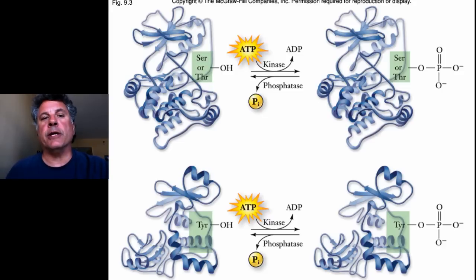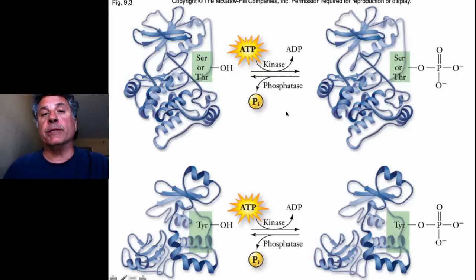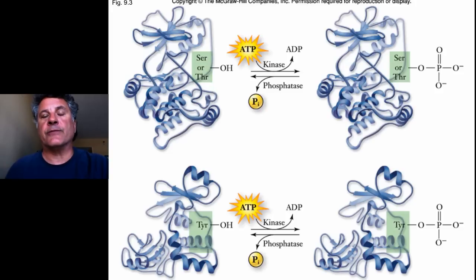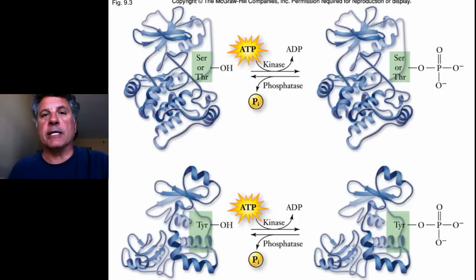It's very important to understand the role of kinases and phosphatases because they become very important enzymes in transducing many cell signaling events. Phosphorylation and dephosphorylation are very important in regulating the response of cells to signals, as we will see.